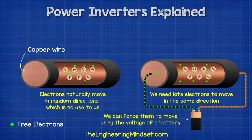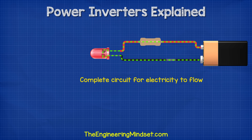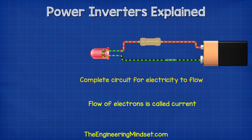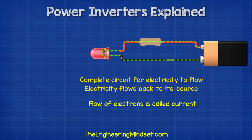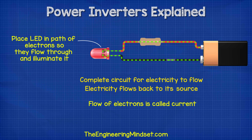The voltage is like pressure and will push the electrons. When we connect a wire to the positive and the negative terminals of a battery, we complete the circuit and electrons begin to flow. We call this flow of electrons current. The electrons always try to get back to their source, so if we place things such as lamps in the path of the electrons, they will have to pass through this and therefore do work for us, such as illuminating the lamp.